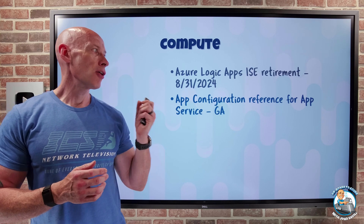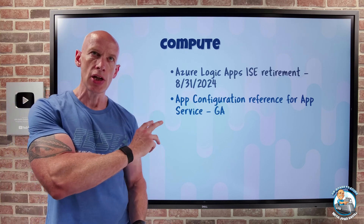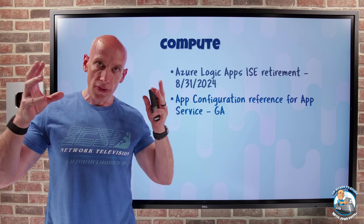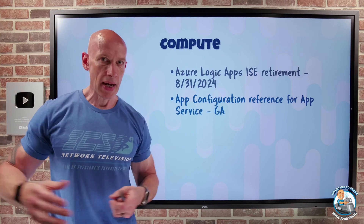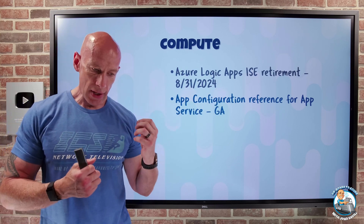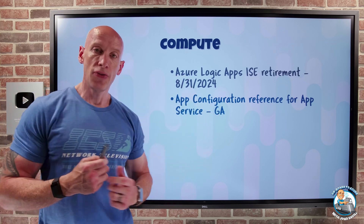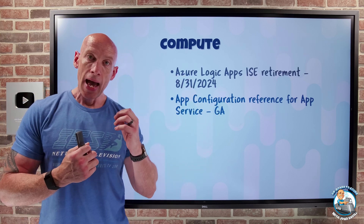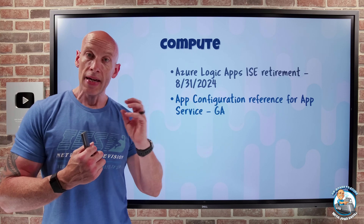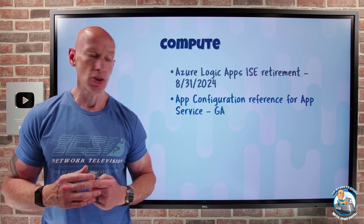App Configuration reference for App Services is now GA. Azure App Configuration lets you store key values as a central configuration store for all your applications. Now, as part of your App Service — for example, your environment variables — you can just reference an App Configuration item and it will be utilized without changing any code. It will simply use that central configuration store.